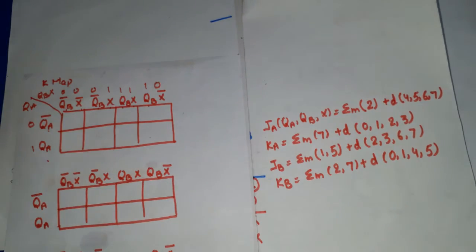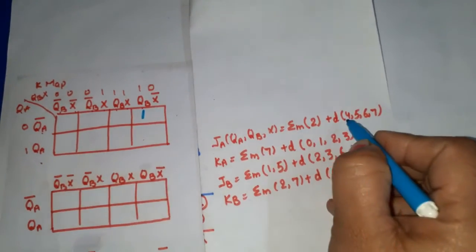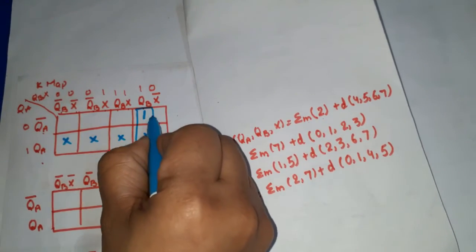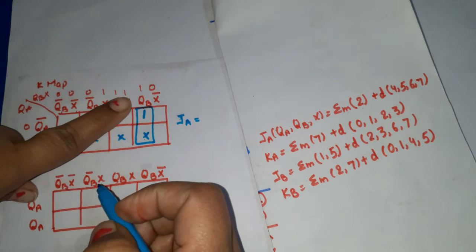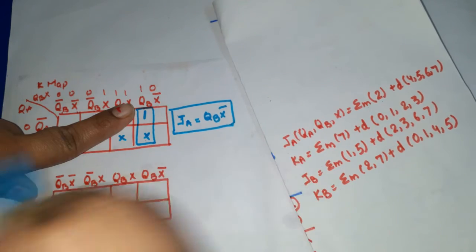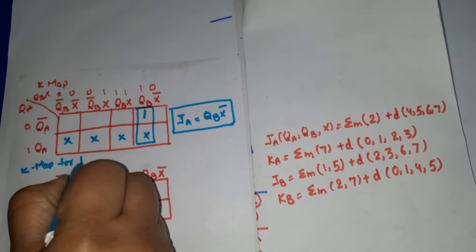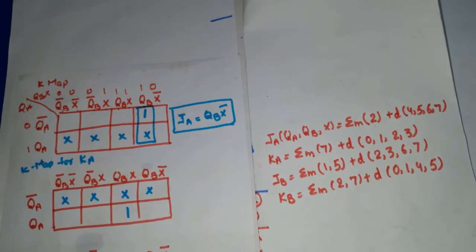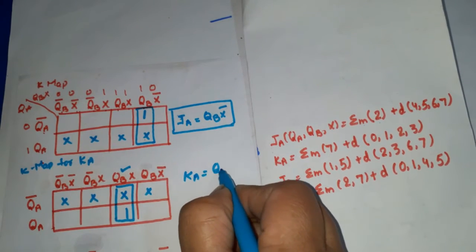Plotting the K-map for JA: minterm 2 is 1, don't cares at 4, 5, 6, 7. Only one pair is possible. The rows not involved give us QA-bar, and the column gives QB·X-bar. So JA = QB·X-bar. Next, for KA: minterm 7 is 1, don't cares at 0, 1, 2, 3. Again only one pair is possible, giving KA = QB·X.